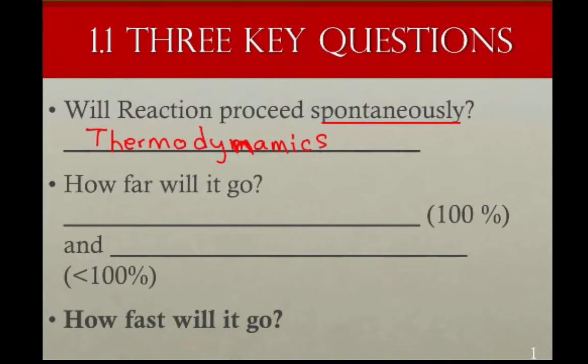The next question says how far will it go? Again, we've spent our time discussing so far reactions that proceed 100% to products. And that field of study is called stoichiometry. And you know how to do those calculations and I promise you, you won't forget them because we'll be integrating them into our conversations as we go. Now there are other reactions that proceed less than 100% because they're reversible.